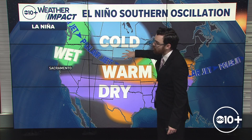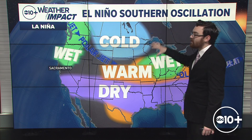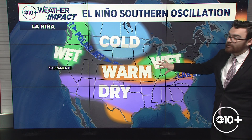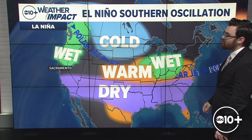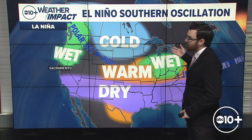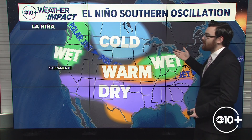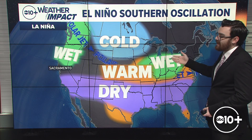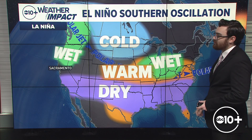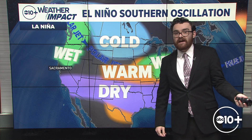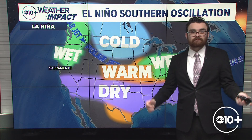That means we're bringing cooler air — and in fact in the wintertime, colder air down from Canada and the Arctic into the upper Great Plains and parts of the Midwest. And for parts of the Great Lakes, it's typically a little wetter as well.